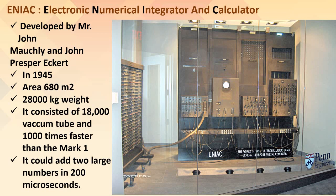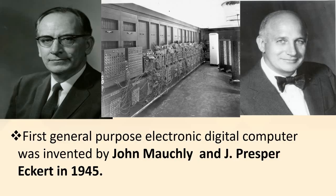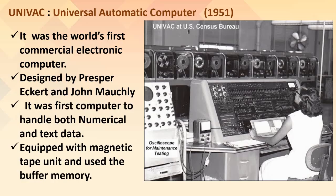The present computer evolved gradually from these early computers. ENIAC could add two large numbers in 200 microseconds. The first general purpose electronic digital computer was invented by John Mauchly and John Presper Eckert in 1945. UNIVAC stands for Universal Automatic Computer. In 1951, it was the first commercial electronic computer, designed by Presper Eckert and John Mauchly.